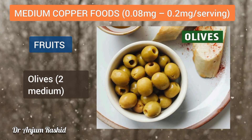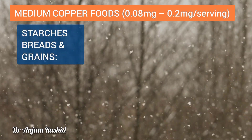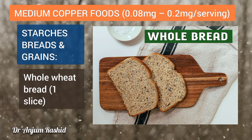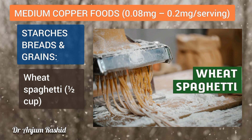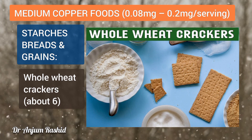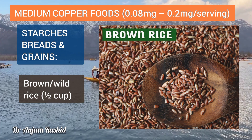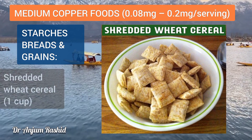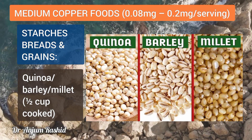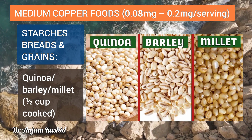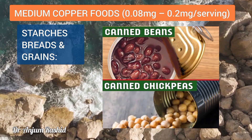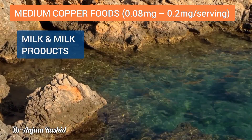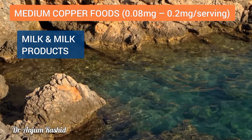Medium copper starches, breads, and grains include whole wheat bread (1 slice), wheat spaghetti (½ cup), whole wheat crackers (about 6), brown or wild rice (½ cup), instant or regular oatmeal (1 cup), shredded wheat cereals (1 cup), quinoa, barley, or millet (½ cup cooked), wheat germ (3 tablespoons), canned beans or canned chickpeas (½ cup).